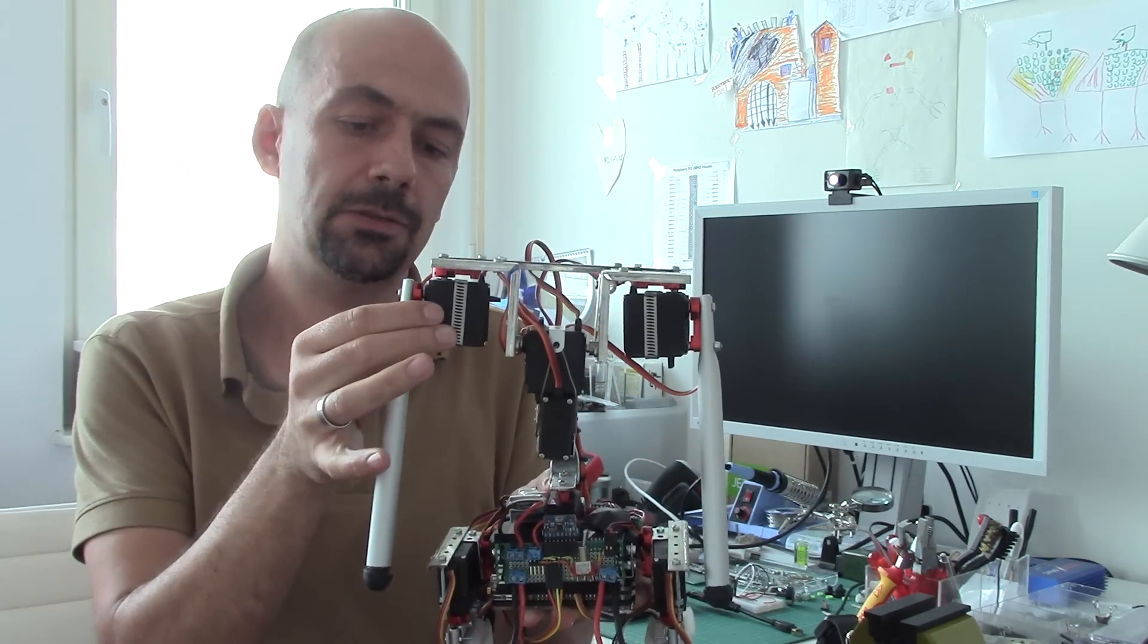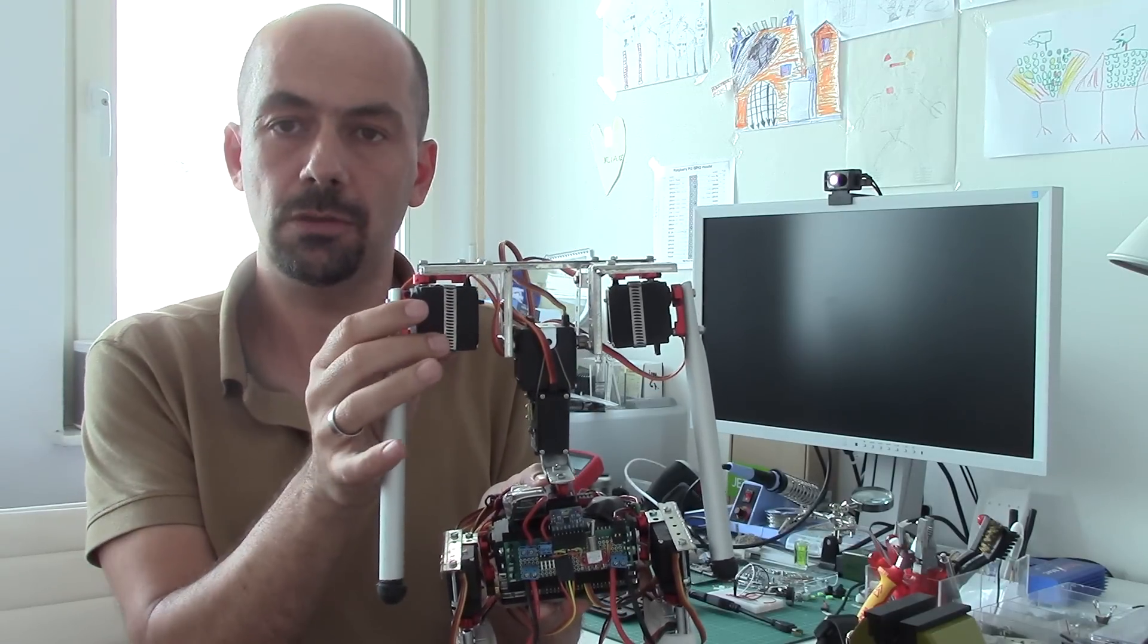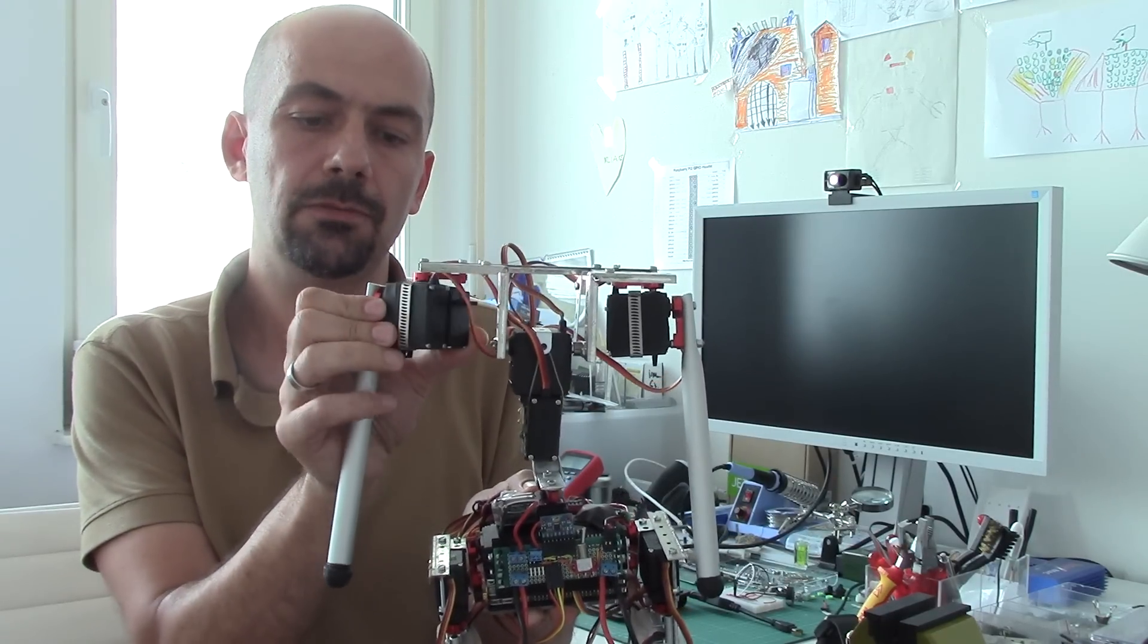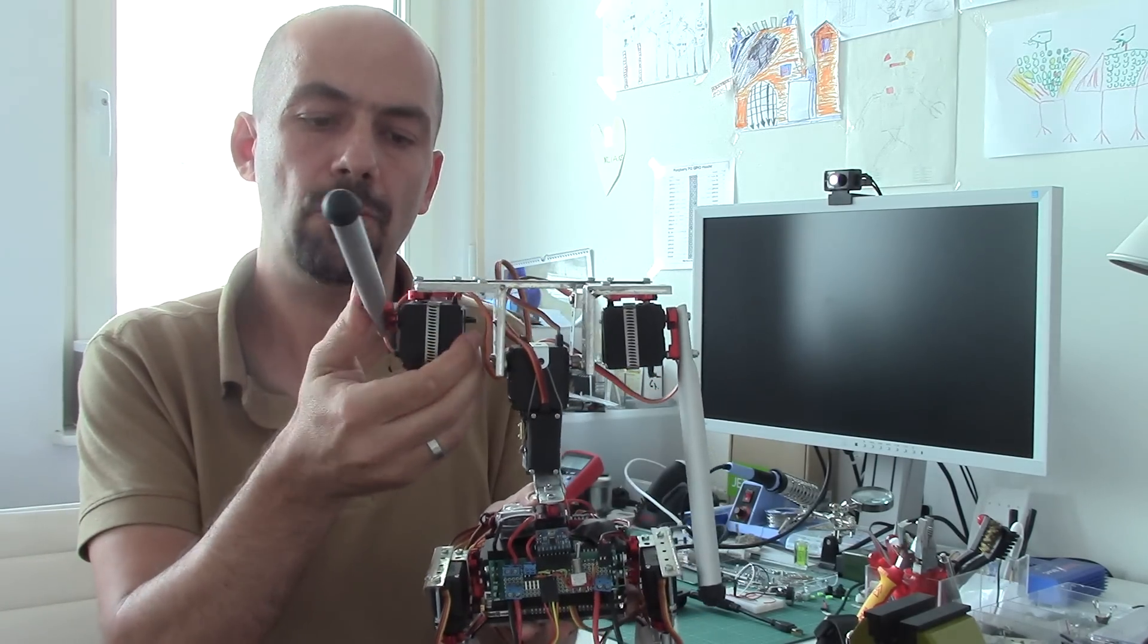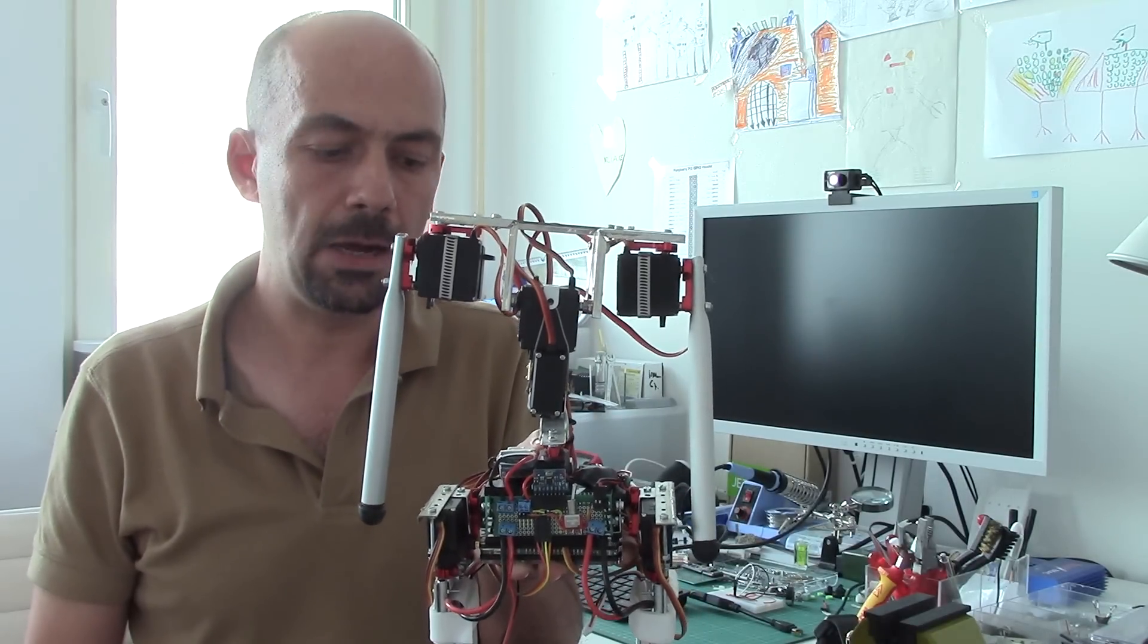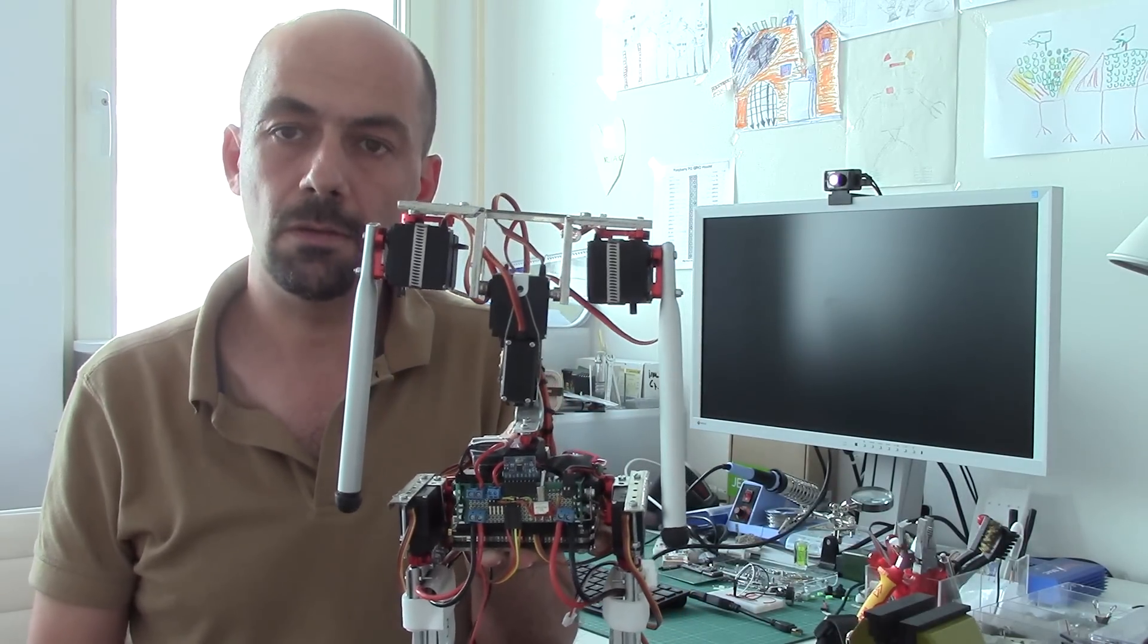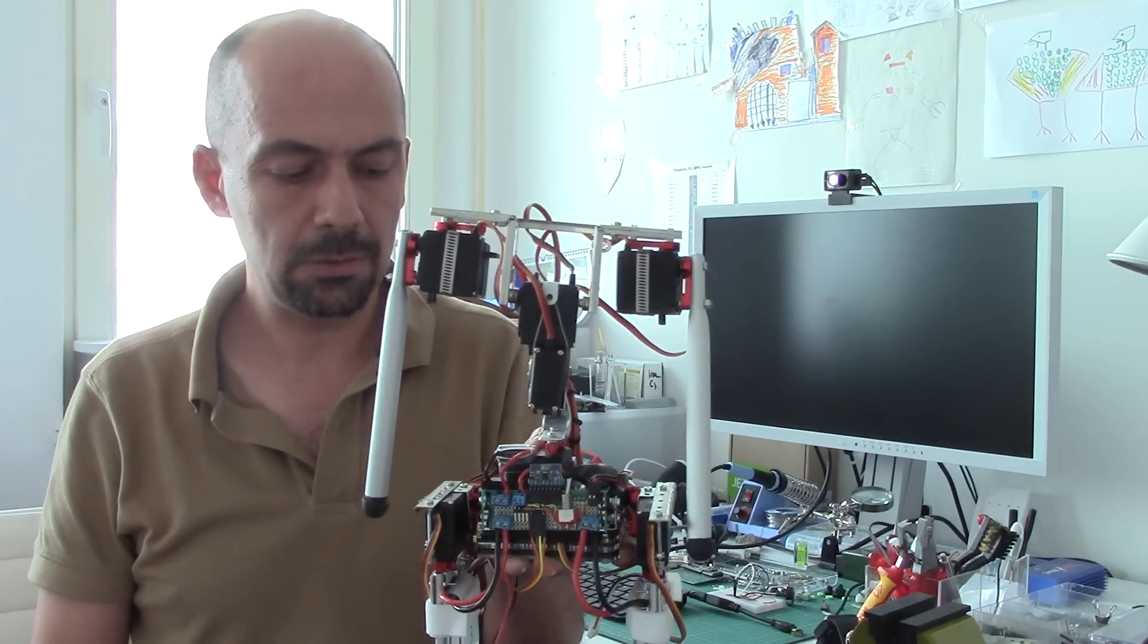And then finally we also have the arms with the shoulders. Shoulders again two degrees of freedom, so turning out so that you can brace basically. I hope that I will be able to get the robot back up again when it's sensing that it's falling or has fallen. Let's see whether that's gonna work out.